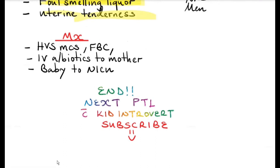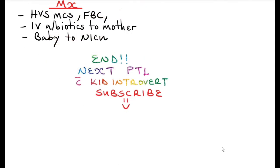Management of chorioamnionitis includes a high vaginal swab for microscopy, culture, and sensitivity, to identify the causative organism and determine antibiotic sensitivity. A full blood count is done to look for signs of sepsis such as leukocytosis. The patient is put on broad-spectrum IV antibiotics. If the chorioamnionitis poses too great a risk to the fetus, the baby is taken to the neonatal intensive care unit for antibiotics and screening for neonatal sepsis and meningitis.